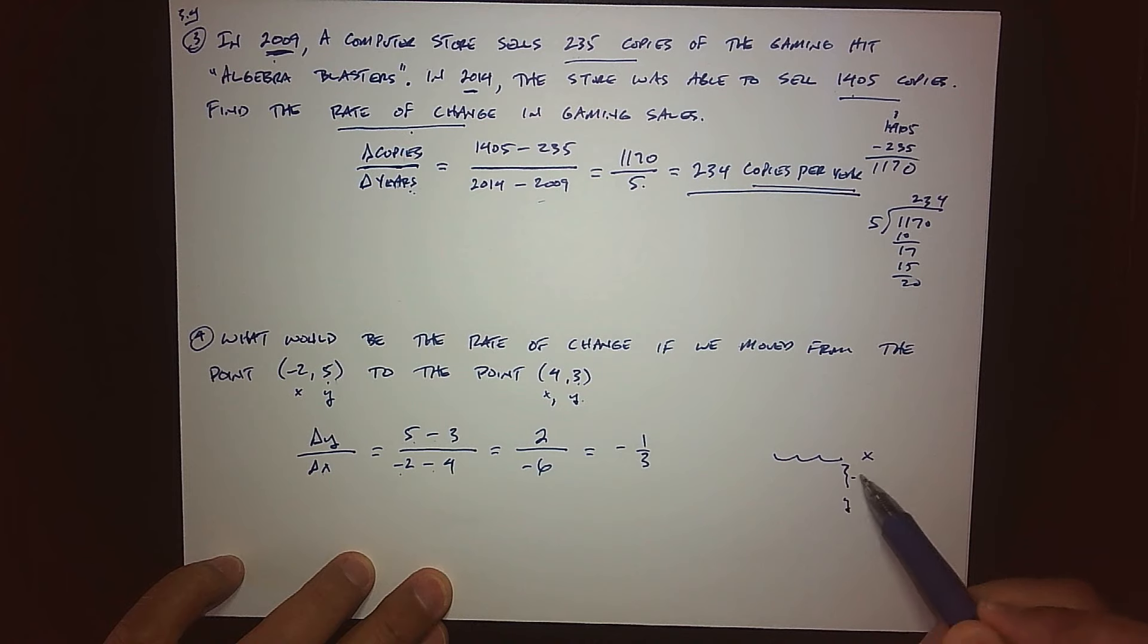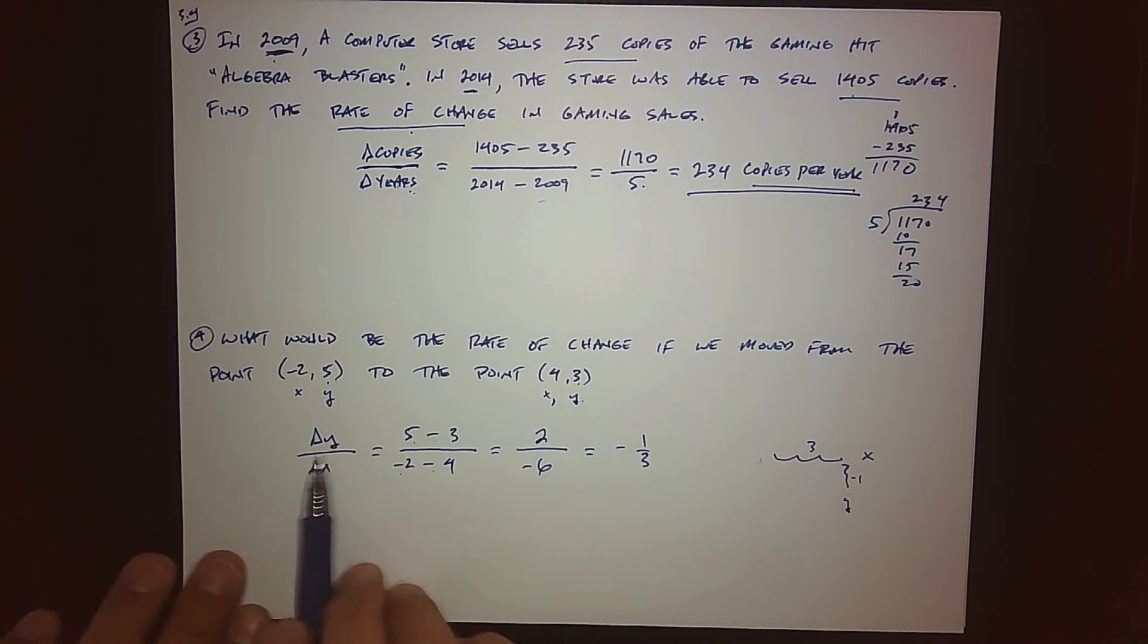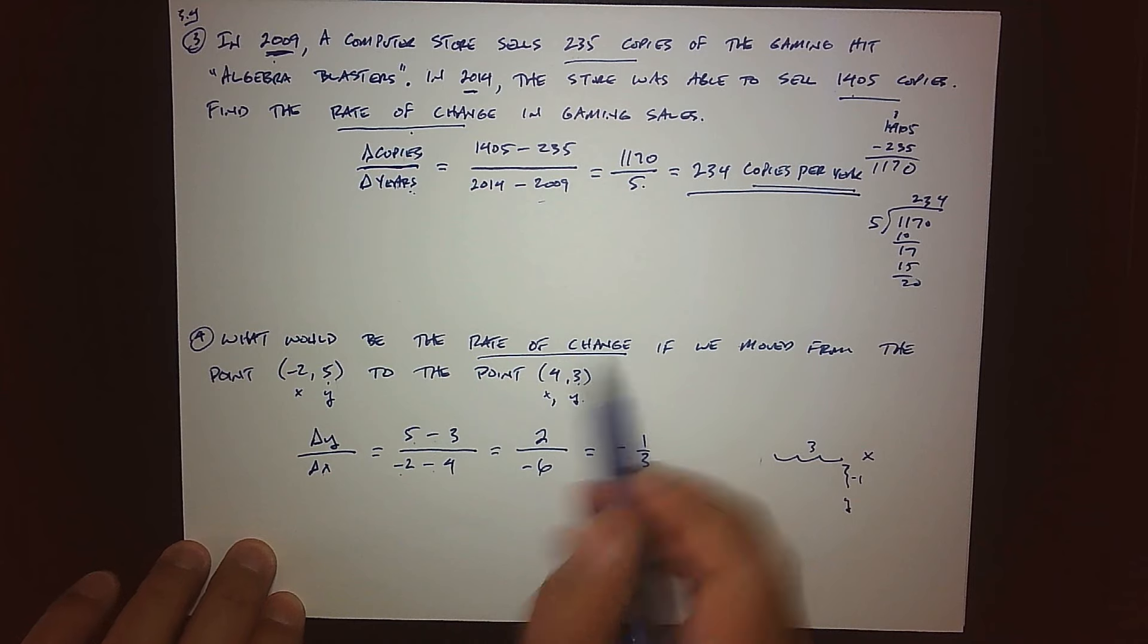And so what this is basically telling us is that for every time we move over 3 units in the x-direction, if this was x, we're falling down in the y-direction. We're going down 1. And so that's basically what that's saying there. And we're starting to kind of visualize that happening. But again, back to the rate of change, we start by figuring out what are the two changing quantities, throw them in a ratio. So when we thought about this, when we move from point to point, the two things are changing: the y-coordinates and the x-coordinates. So there's my rate. And then we have to figure out how they're changing. Well, we went from 5 to 3 and -2 to 4.